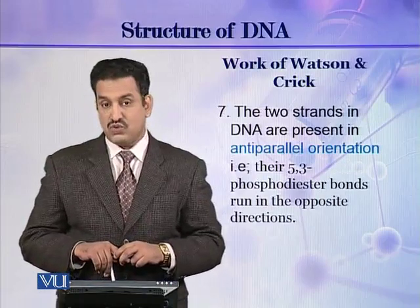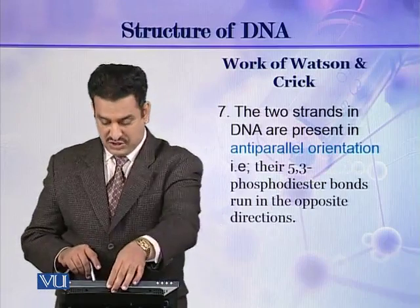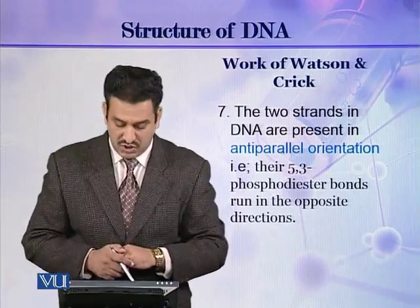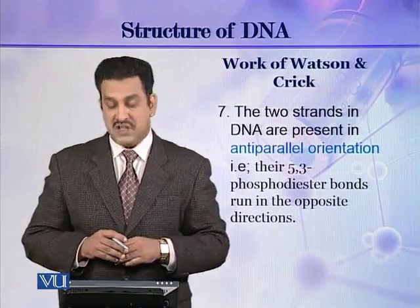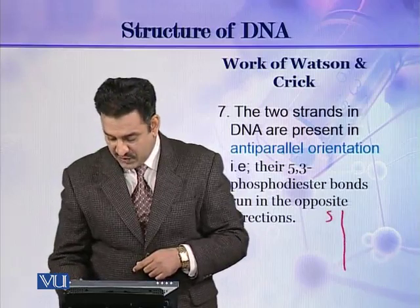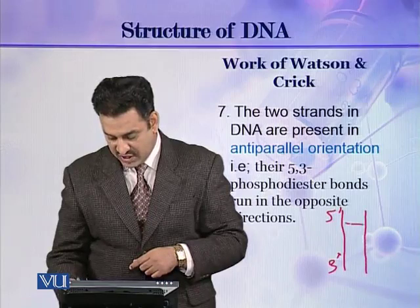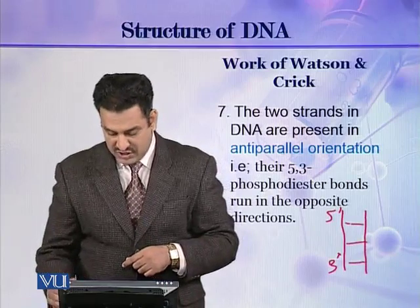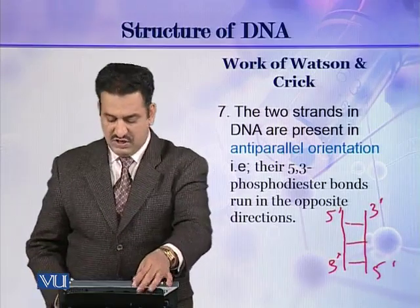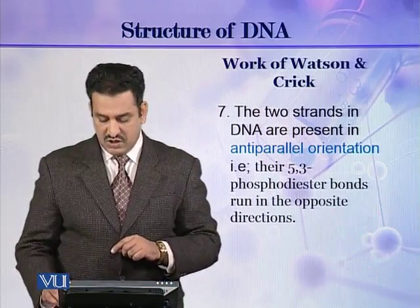They also described that the two strands of DNA are present in an anti-parallel orientation. That is, their 5' to 3' phosphodiester bonds run in opposite directions. If one strand has its 5' prime here and 3' prime here, the other strand will be in the opposite orientation — its 3' prime here and 5' prime here. In this way, the two strands are present in an anti-parallel orientation.